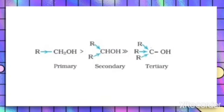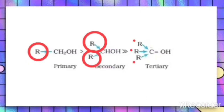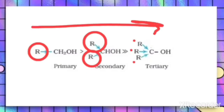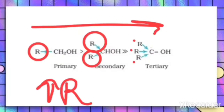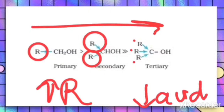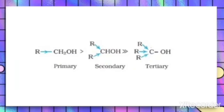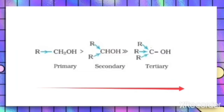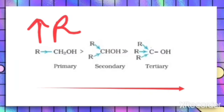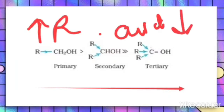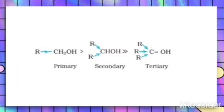The alkyl group decreases the acidic character of alcohol. When you compare primary, secondary, and tertiary alcohols — primary has one alkyl group, secondary has two, and tertiary has three — as the number of alkyl groups increases, the acidic character decreases. So from primary to secondary to tertiary, acidic character decreases because the number of R groups is increasing.